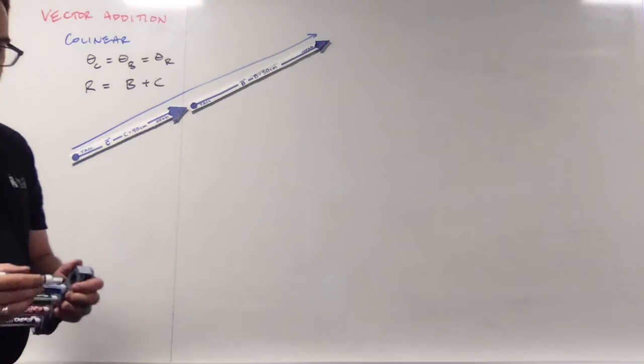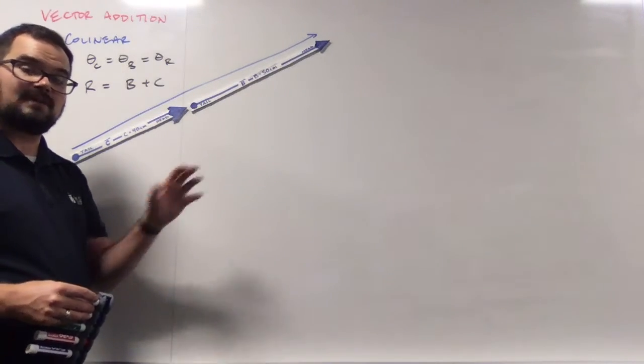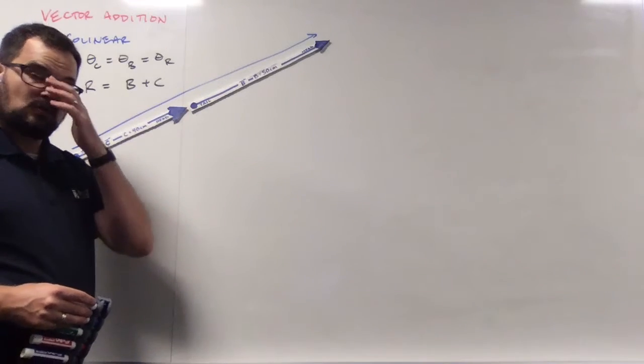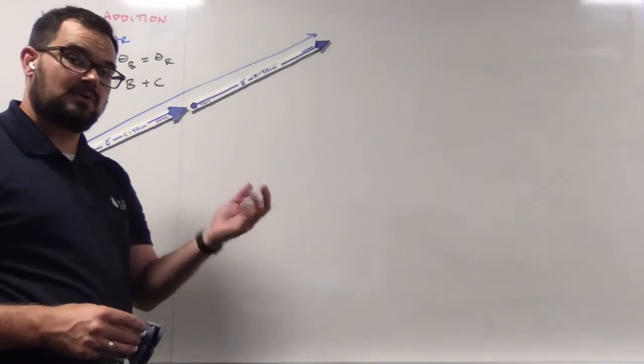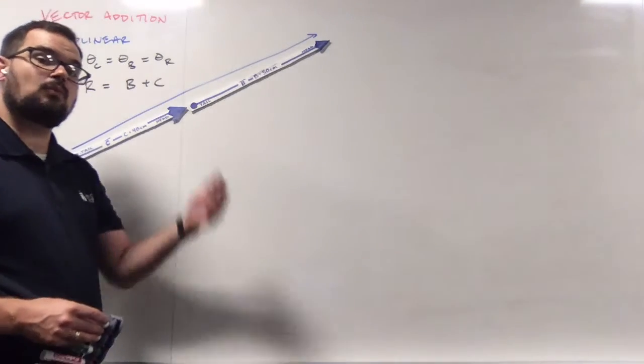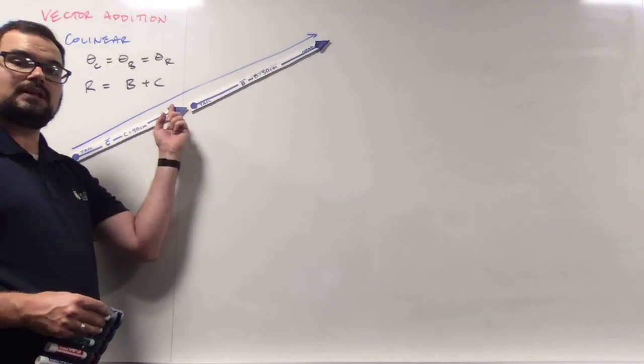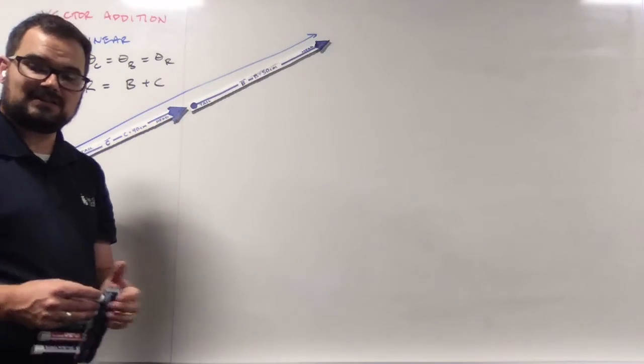Now, what we've just said previously was that we could break our vectors into their x and y components, which means now we're going to have a collection of components that point in the x direction, which are all collinear, and a collection of components that point in the y direction, which are all collinear. And to do collinear addition, we just have to add up the magnitudes.